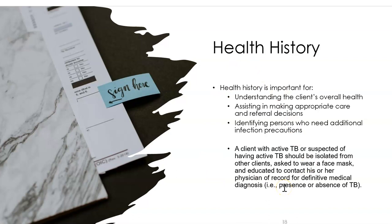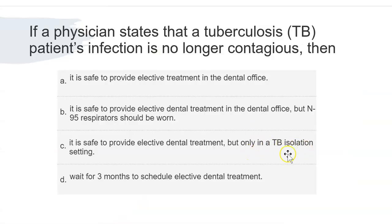Health history is very important because clients usually disclose infectious diseases — but as we know, they may not, which is why we use standard precautions. If you suspect someone has active TB, have them wear a face mask right away and contact their doctor to confirm. If they do have active TB, you cannot see them in a regular setting — urgent dental treatment must occur in a TB isolation setting.